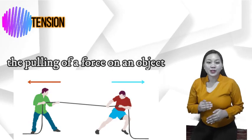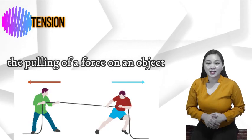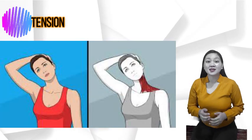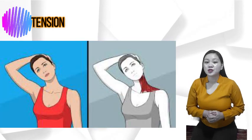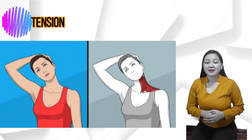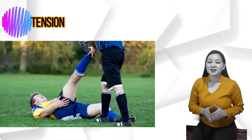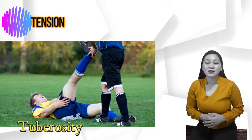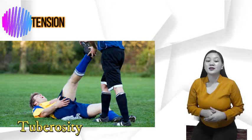Tension. The pulling force of an object is tension. The muscles often apply tension as they pull on bones to make them move. In fact, the bony bumps or what we call as the tuberosities on your body are a result of muscle pulling on the bone.